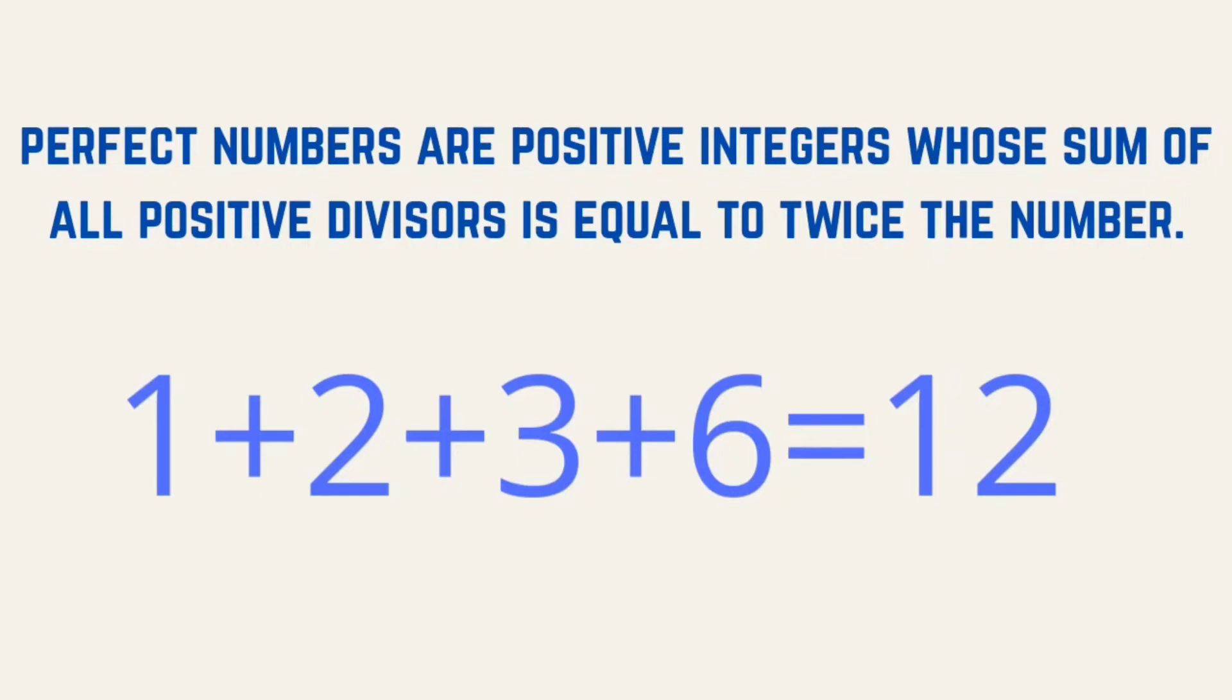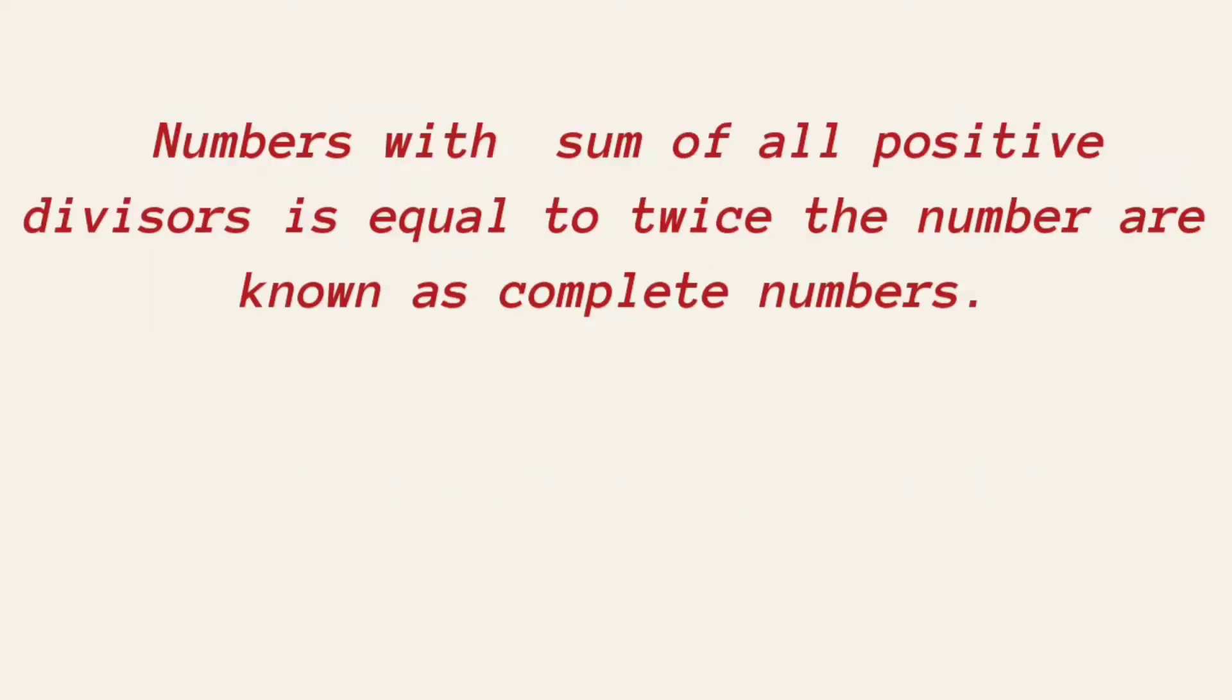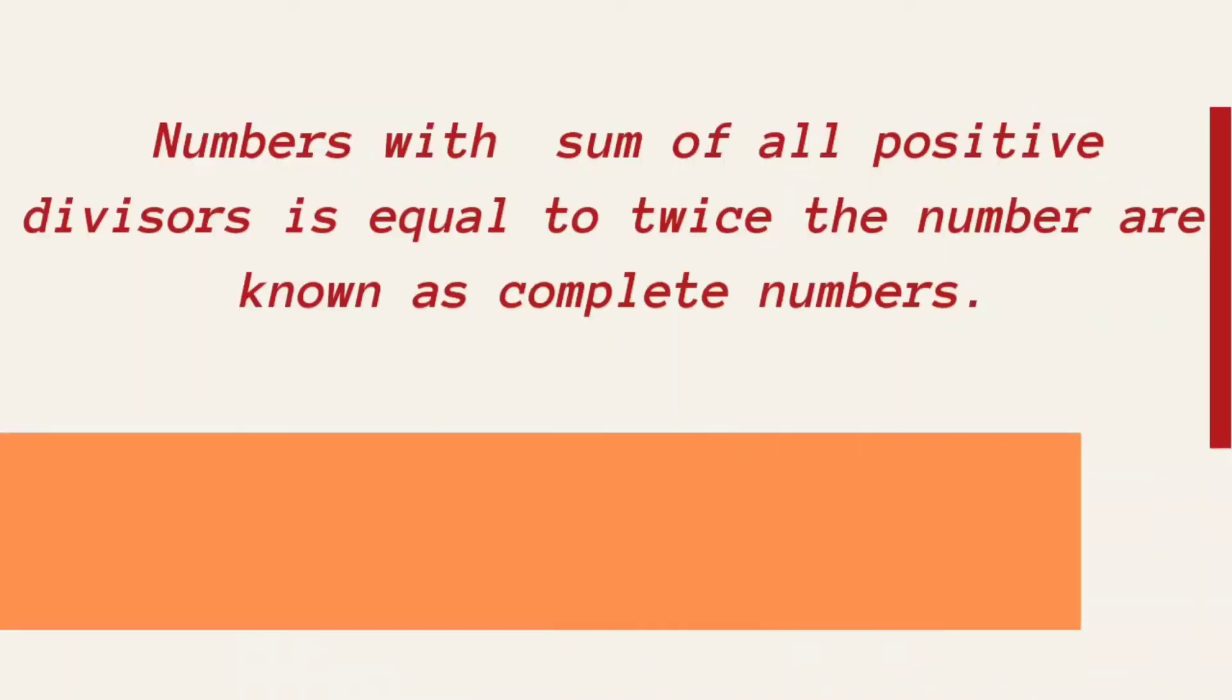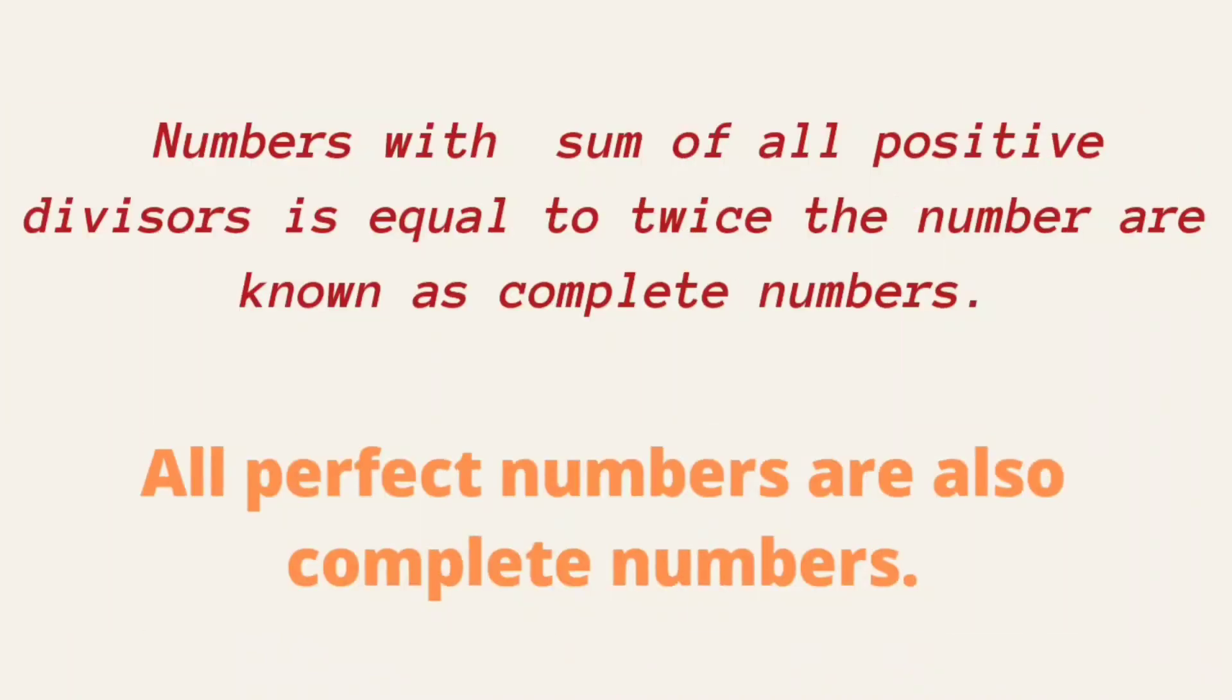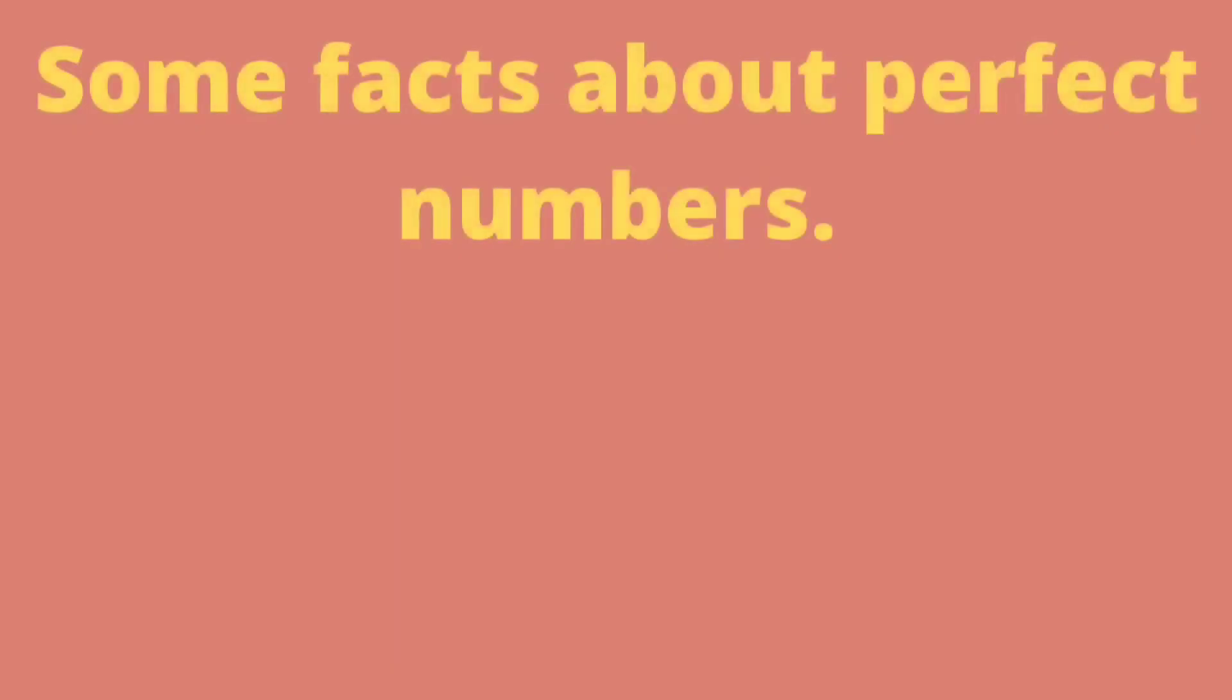The sum of 1, 2, 3, and 6 is 12. Numbers with sum of all positive divisors equal to twice the number are known as complete numbers. All perfect numbers are also complete numbers.